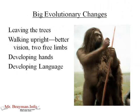The big evolutionary changes these animals went through as they evolved into Homo sapiens included, first, leaving the trees and walking upright. This caused the evolution of better vision, and our ancestors now had two free limbs to do things with. As part of that, they developed hands, as well as the development of language as we know it. Many animals have what we call language, but there doesn't seem to be any animal on the planet that makes sounds and signals as complexly as we do.